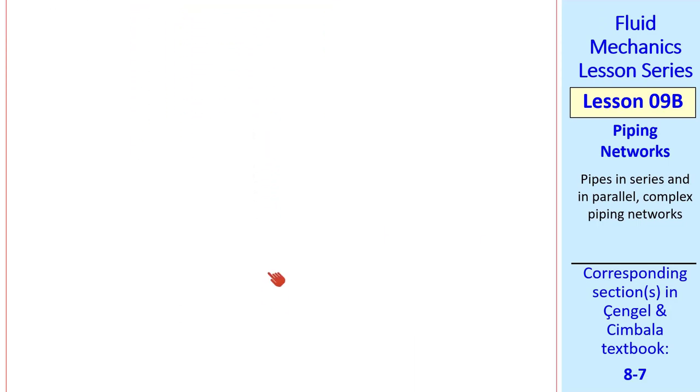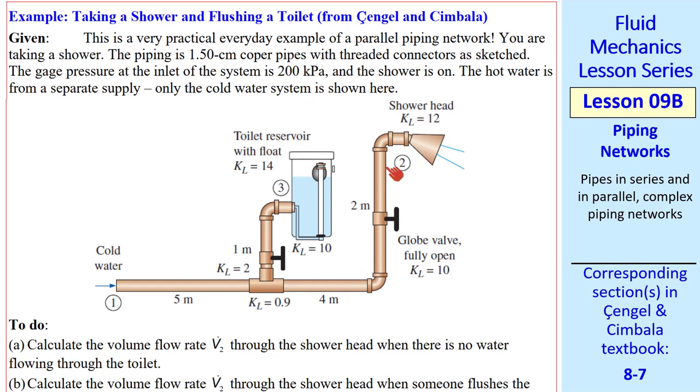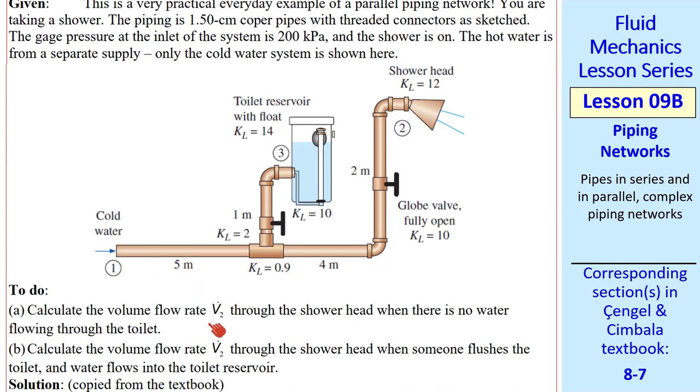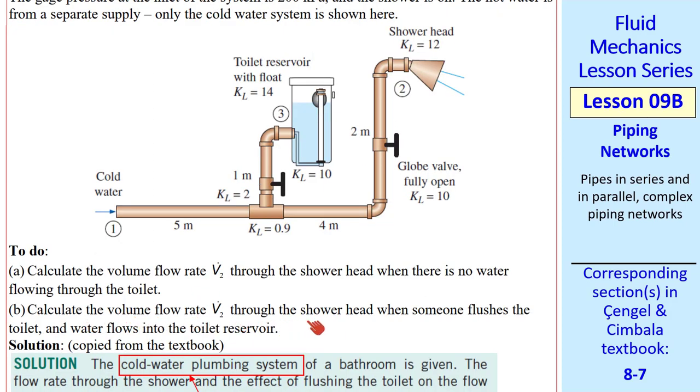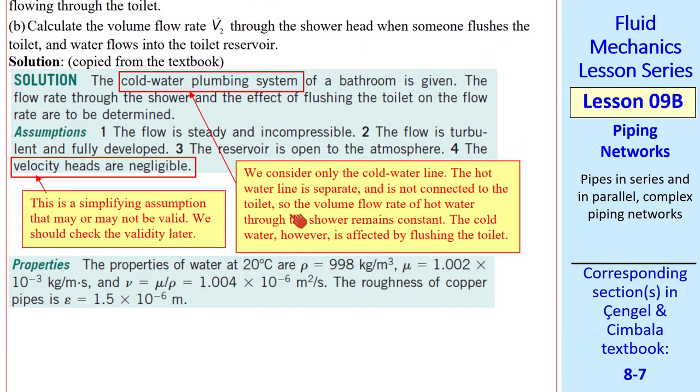Let's do an example. This was a fun example that we made when writing the textbook. Everybody has had this experience where you're taking a shower, and someone flushes the toilet, and suddenly the water gets really hot. We tried to make this as realistic as possible, with minor losses associated with the shower head, the float mechanism in this toilet reservoir, valves, elbows, T's, and we calculate the volume flow rate through the shower head when there's no water flowing through the toilet. In other words, it's just straight to the shower. And the volume flow rate through the shower head when someone flushes the toilet, so part of that water is diverted into the toilet reservoir.